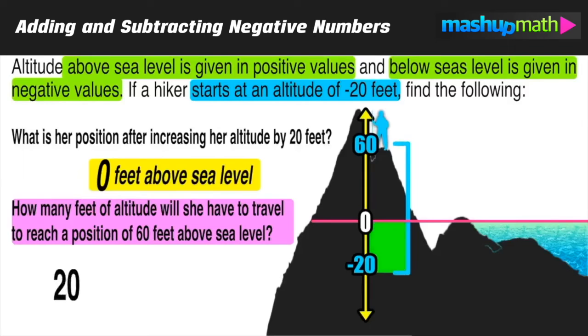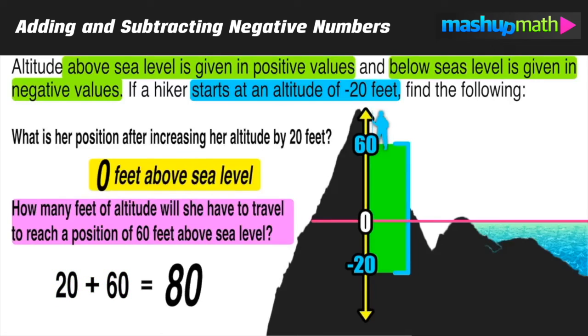Now we just figured out from negative 20 to zero is 20, and then from zero to 60 is 60. So to figure out the total, the whole thing, you just have to add those two values together. 20 plus 60 is equal to 80. So in order for her to reach that altitude of 60 feet above sea level, she would have to increase by 80 feet.